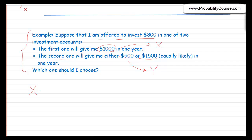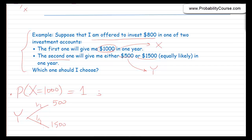x is not really random: the probability that x equals 1,000 is 1. However, for y there are two possibilities: y is either $500 or $1,500, each with probability 1/2. The expected value of x is 1,000. The expected value of y is 500 × (1/2) + 1,500 × (1/2), which is also 1,000.